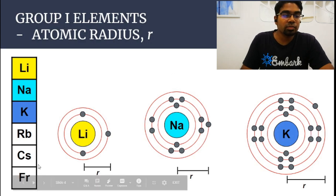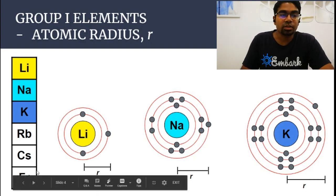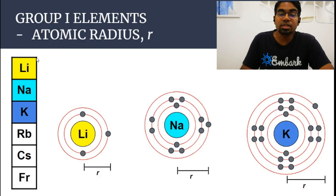Francium will have the largest atomic radius in group 1, and lithium has the smallest atomic radius in group 1.